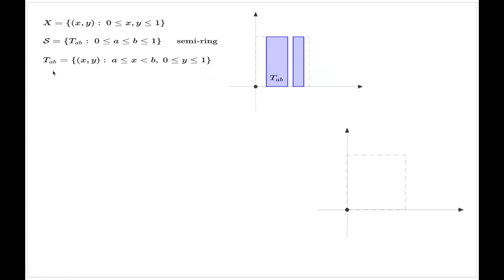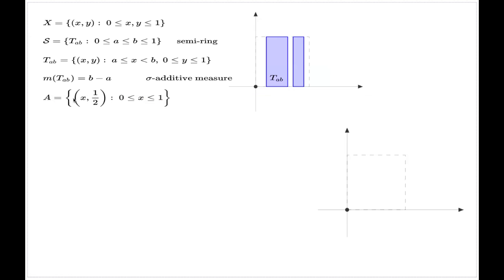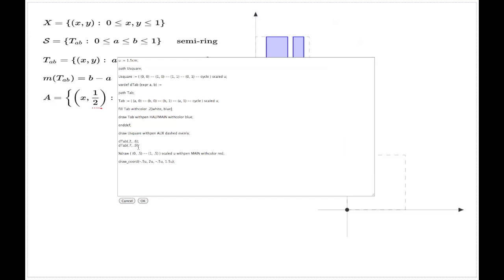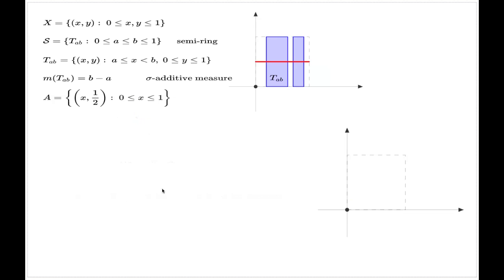For each tab I will introduce a measure which is the length of the base of this upright rectangle. We have to show that this is a sigma-additive measure — that's another part of the problem. We also need to show that the horizontal line at level one-half is not Lebesgue measurable with respect to the sigma algebra that appears when you take the couple (S, m) and do the standard Lebesgue extension of measure for this couple.